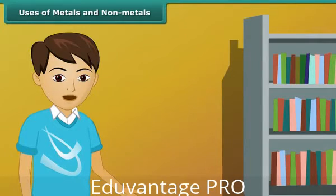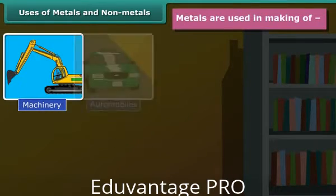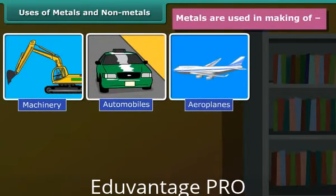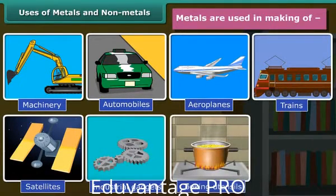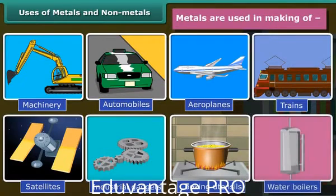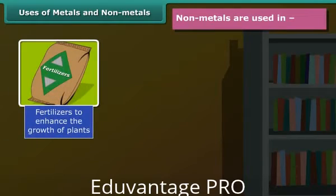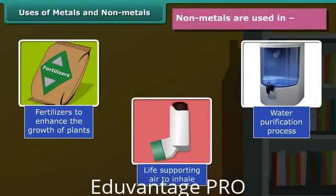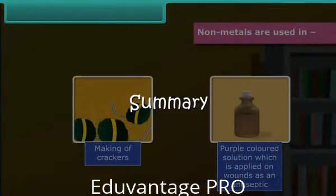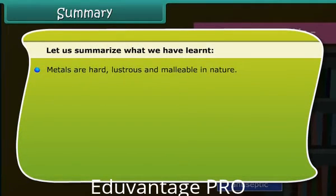As we know that metals are hard in nature, they are used in making machinery, automobiles, aeroplanes, trains, satellites, industrial gadgets, cooking utensils, water boilers, etc. Non-metals are not so hard, so they are used in fertilizers, water purification processes, life-supporting air, crackers, and more.